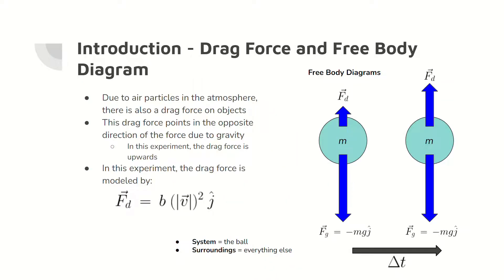Due to air particles, there is also a drag force on objects. This drag force is in the opposite direction of the object's motion. In this lab, the drag force is in the positive y direction and uses the product of a drag coefficient, b, and the square of the magnitude of the object's velocity. The free body diagrams show the forces acting on the object over a change in time. As shown, the drag force increases with time as the magnitude of the velocity of the object increases due to the force of gravity. The system is the ball and everything else is the surroundings.